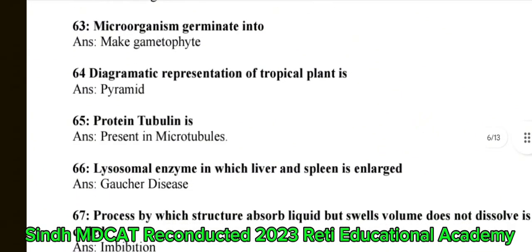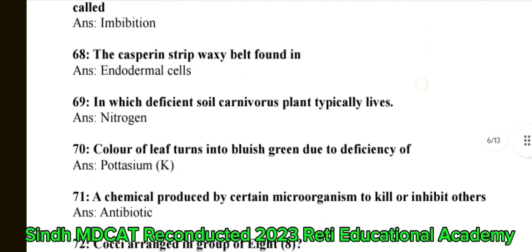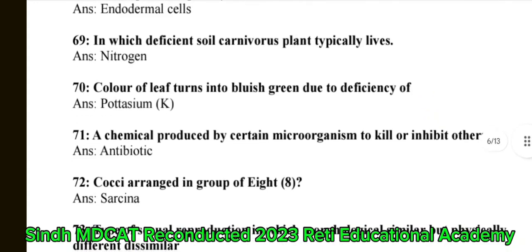Question 66: Lysosomal enzymes in which liver and spleen is enlarged — the correct answer is Gaucher disease. Question 67: The process by which a structure absorbs liquid but the solute's volume does not dissolve is called imbibition. Question 68: The Casparian strip, a waxy belt, is found in endodermal cells. Question 69: In which deficient soil do carnivorous plants typically live — the correct answer is nitrogen.